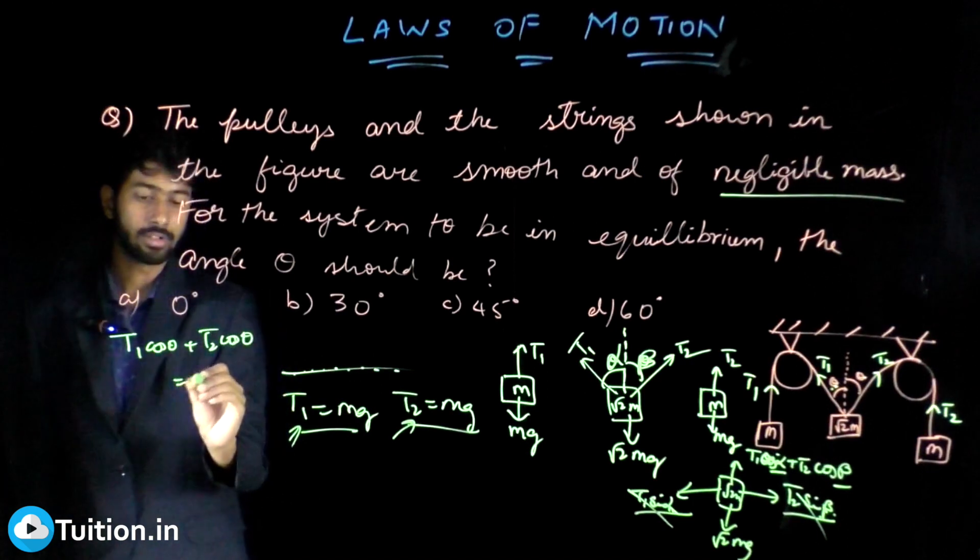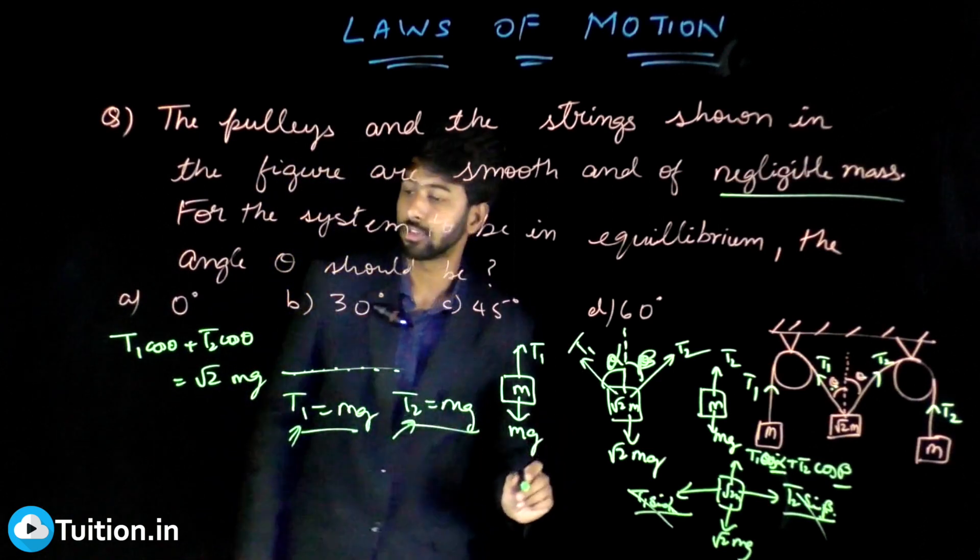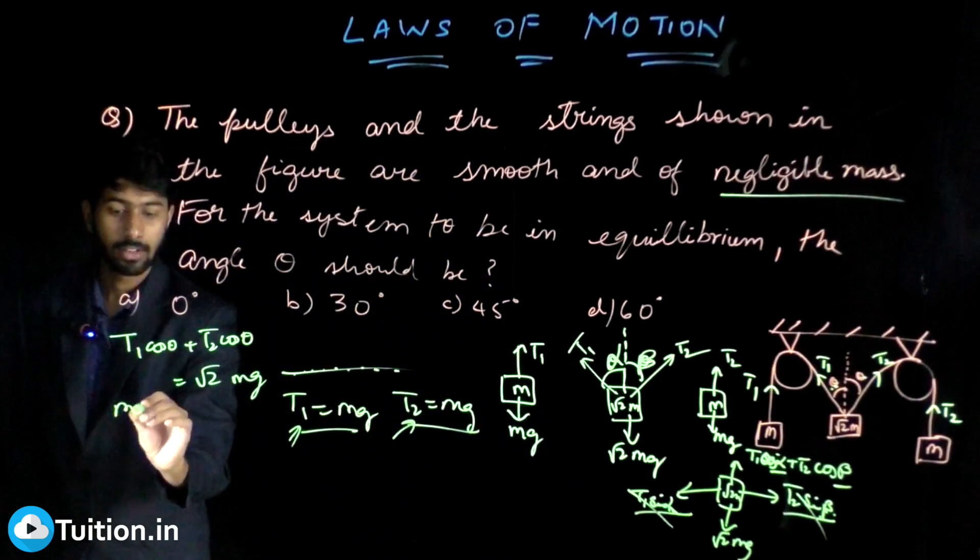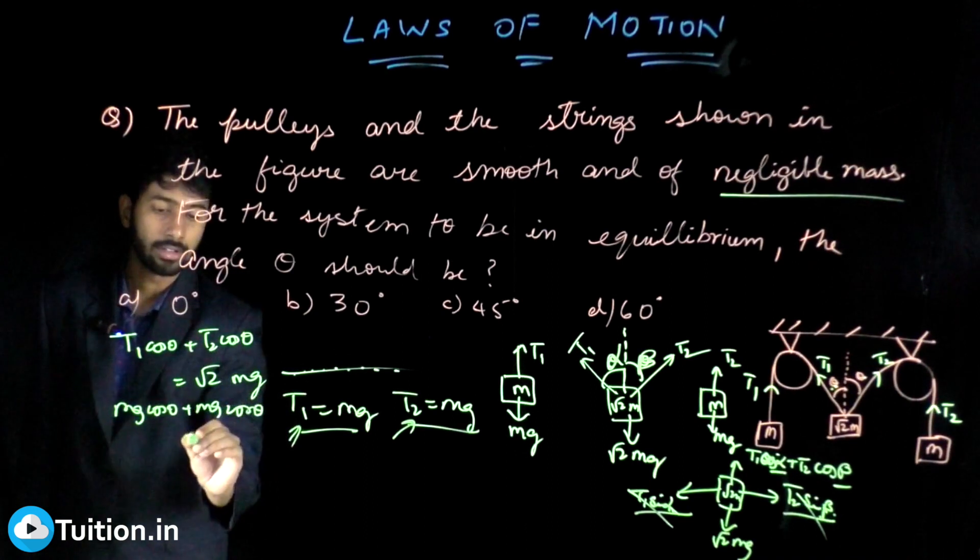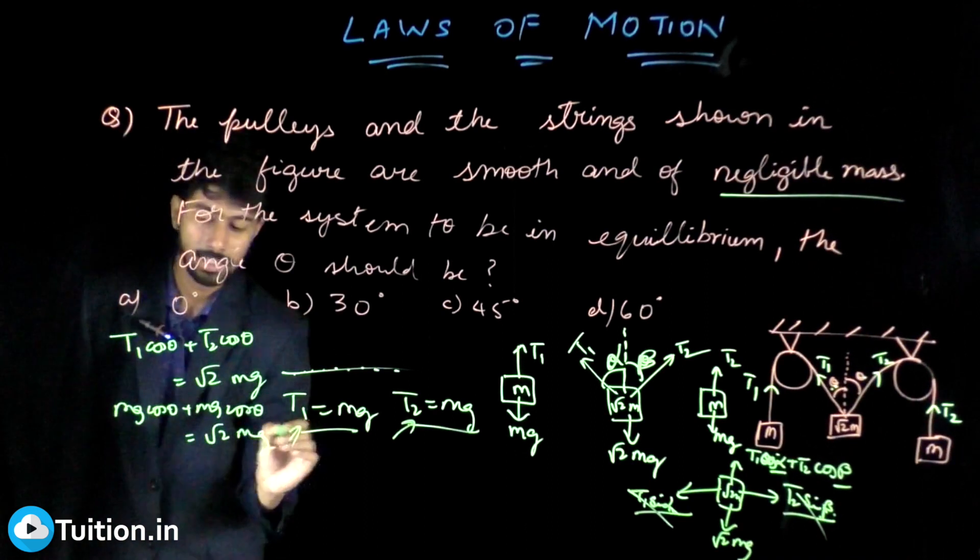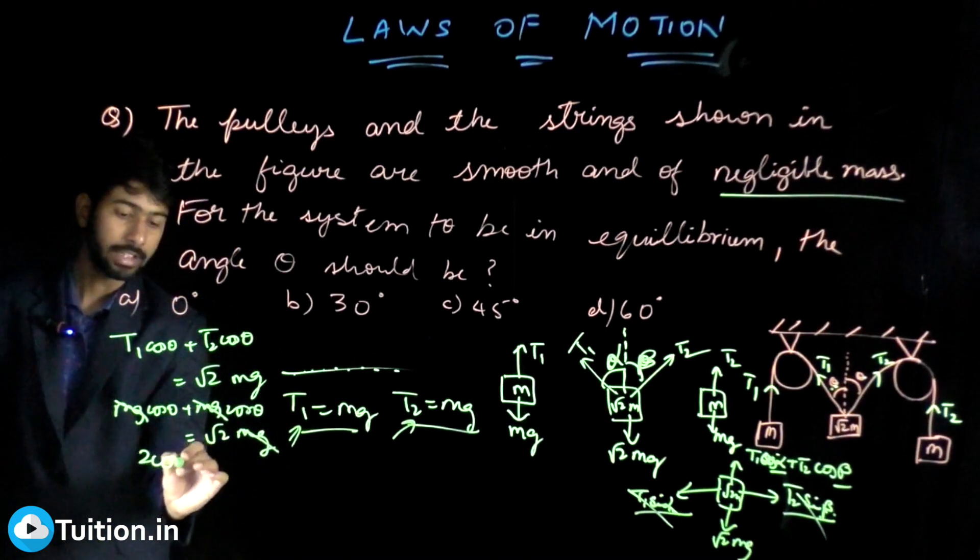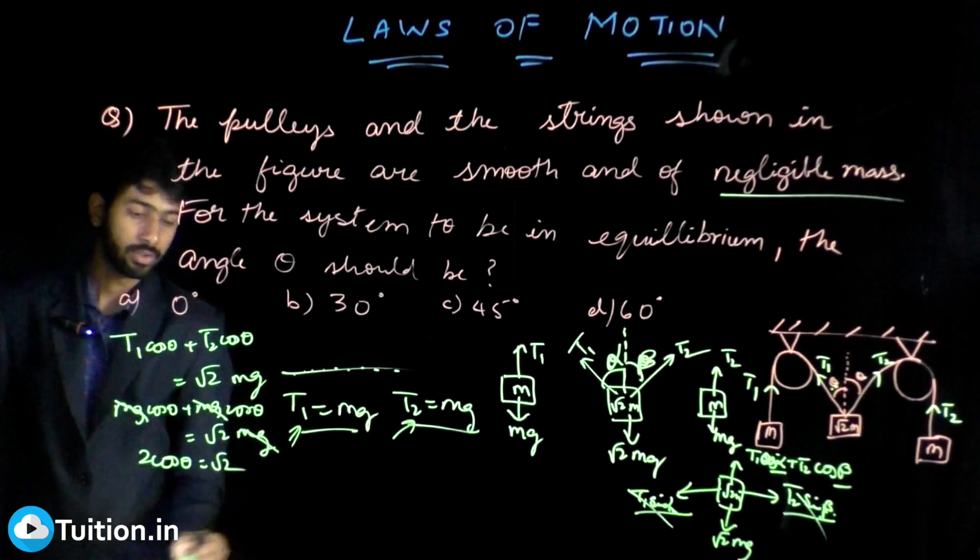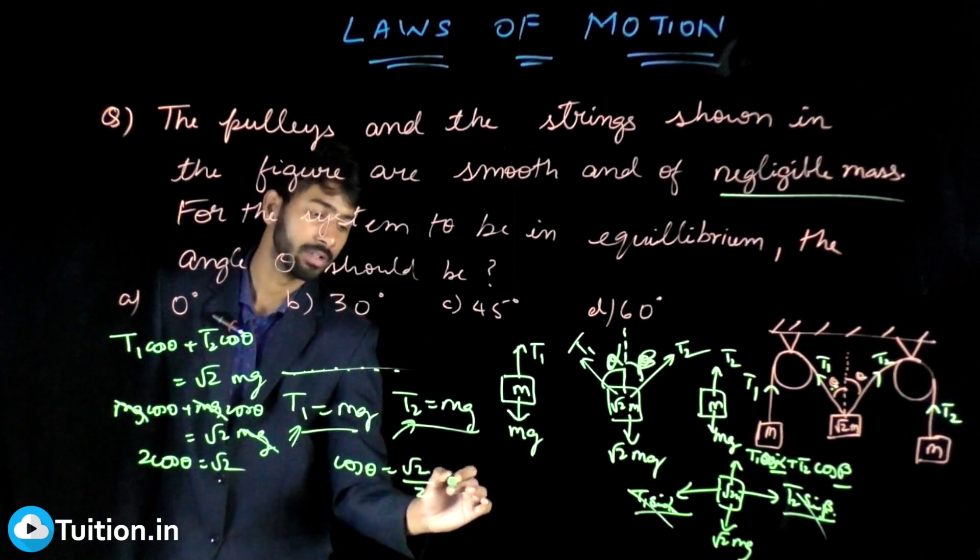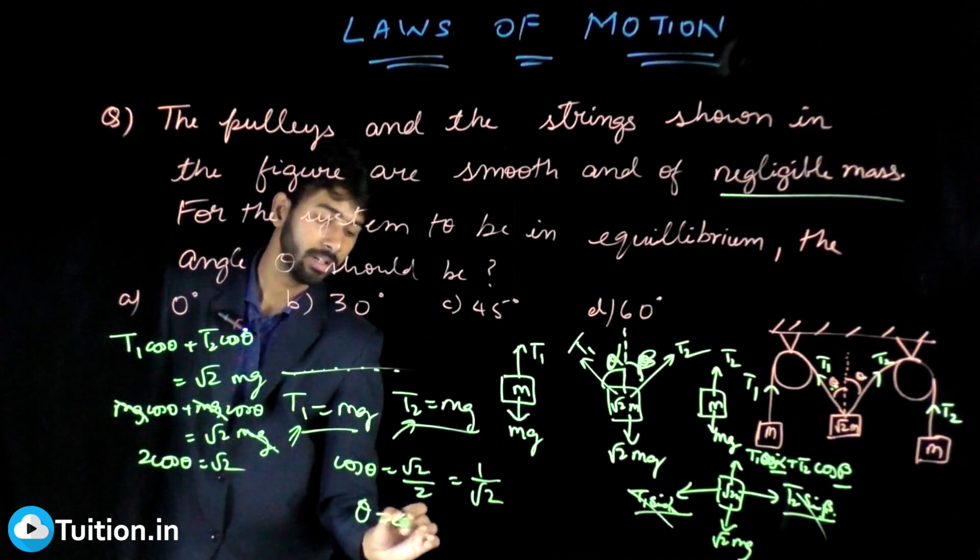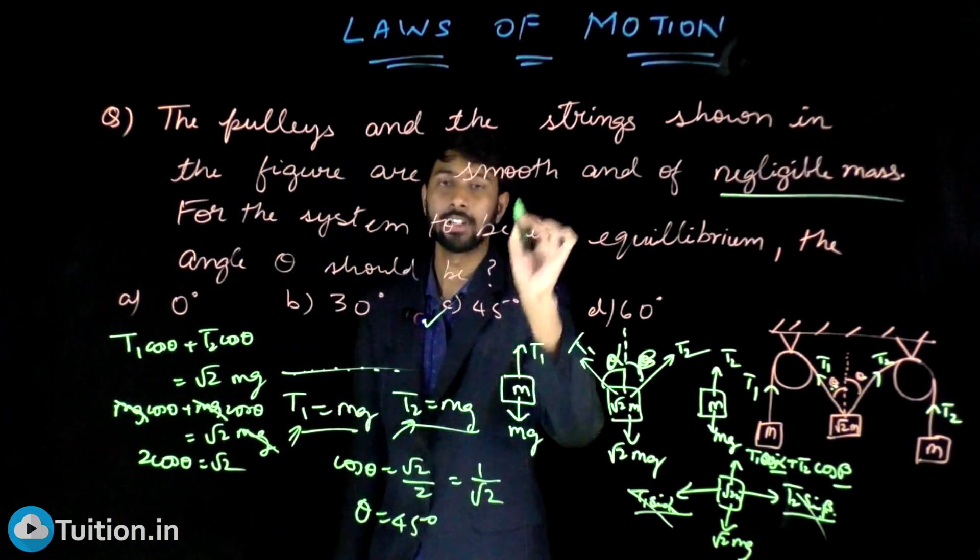Now T1 is mg and T2 is also mg, so mg cos theta plus mg cos theta equals √2mg. Canceling mg, what I have is 2 cos theta equals √2, so cos theta equals √2 by 2, which is 1 by √2. So your theta has to be 45 degrees. The correct answer should be 45 degrees.